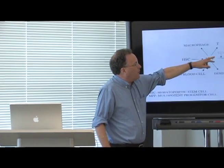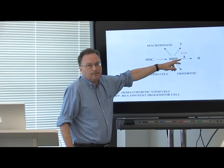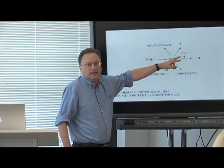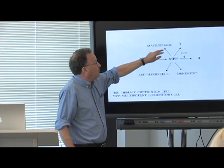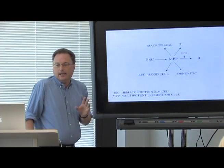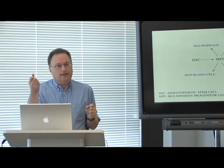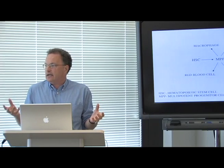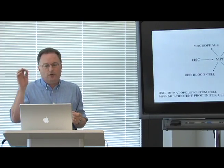There is a gene known as E2A, which in both mice and humans is required for the development of B cells. In mice that lack this gene, there are no B cells, but they will generate macrophages, T cells, dendritic cells, and red blood cells. We thought that if we take the bone marrow of these mice lacking this gene and culture them in vitro in the presence of cytokines and growth factors, a culture would grow out that would remain multipotent.